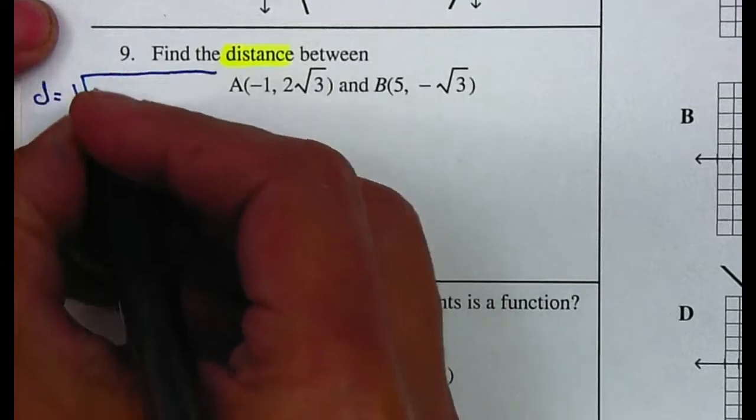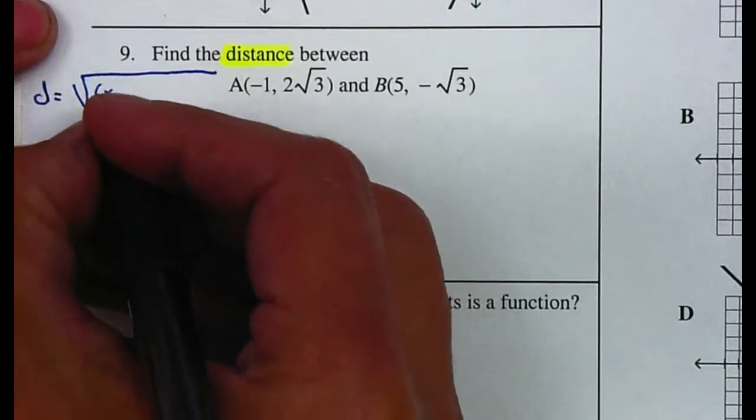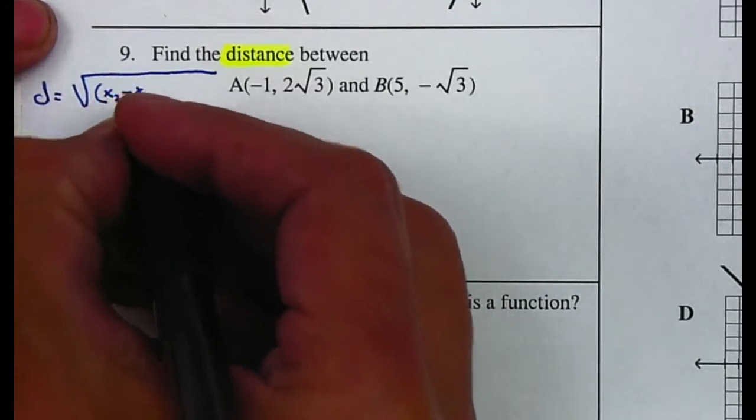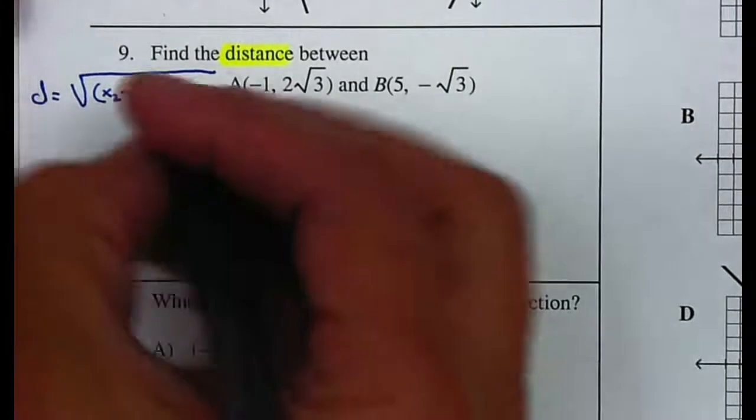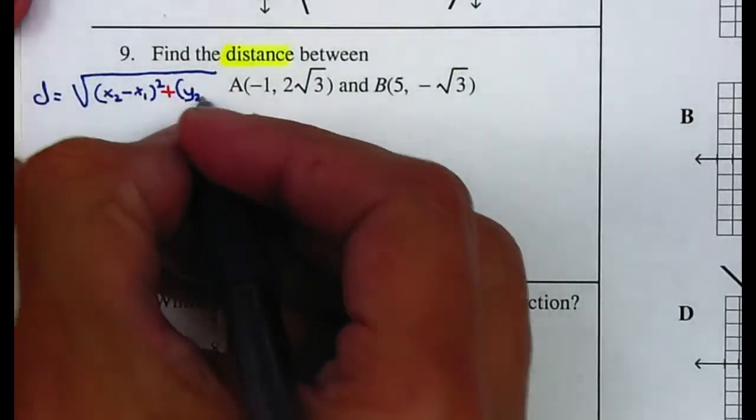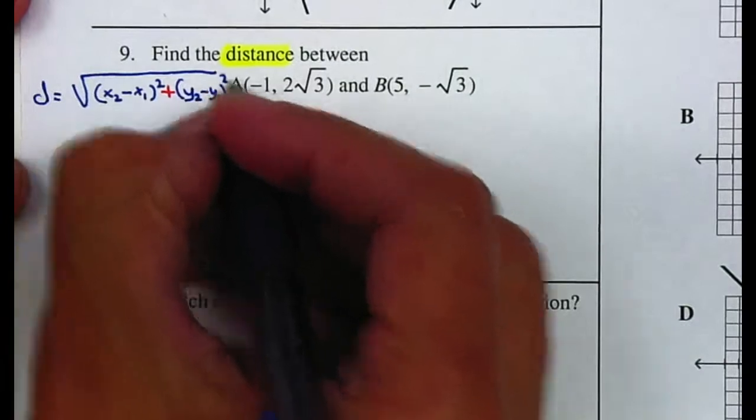The distance formula is the square root of x2 minus x1, and we're going to square it, plus y2 minus y1, and then we're going to square it.